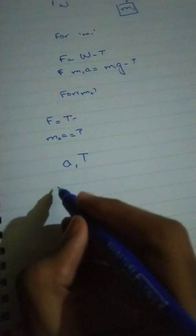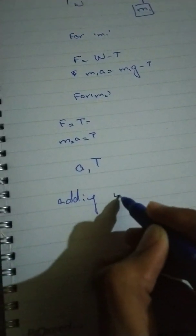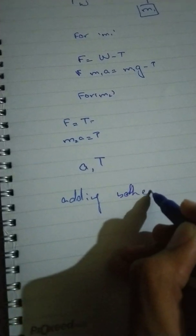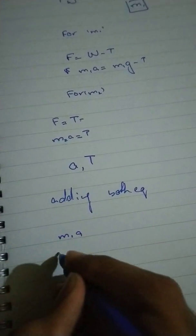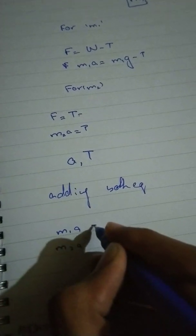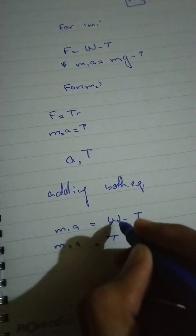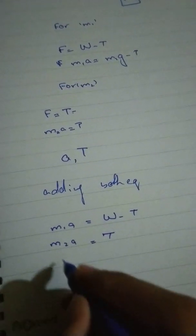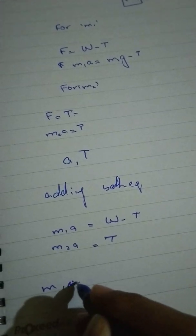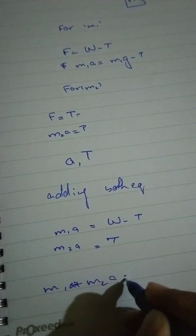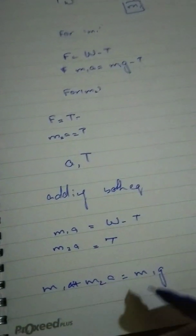Adding both equations, M1 A plus M2 A is equals to M1 G minus T plus T. So M1 A plus M2 A is equals to M1 G.